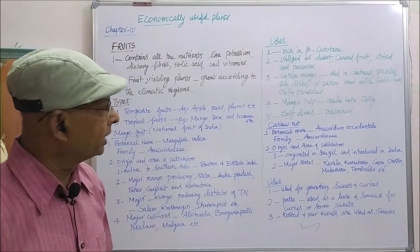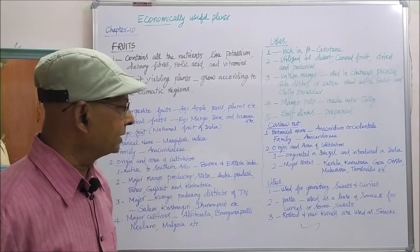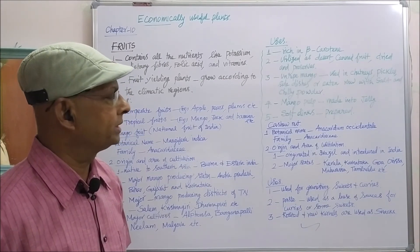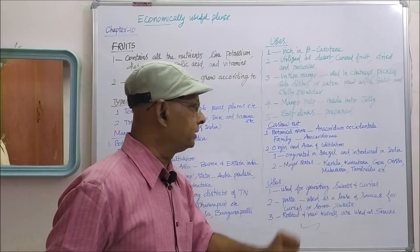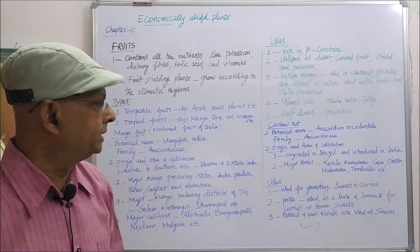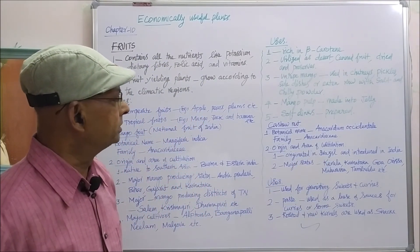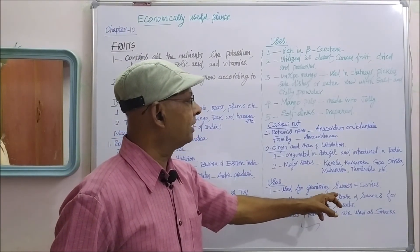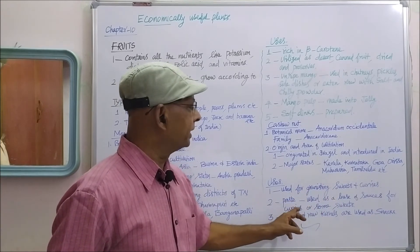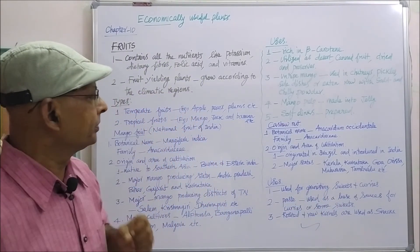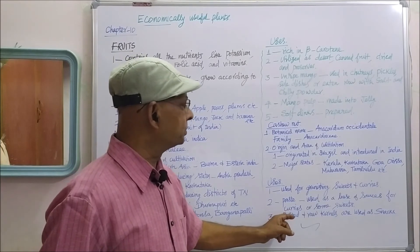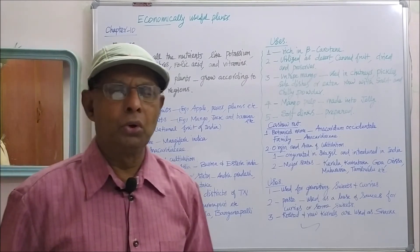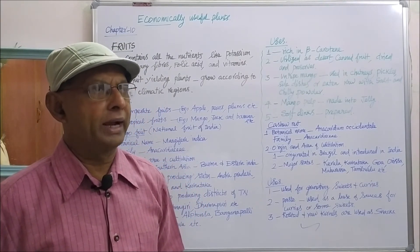What are the uses of cashew nut? The cashew nut is used for garnishing sweets and curries — that means in order to decorate sweets and curries it is used. The paste prepared from the cashew nut is used as a base of sauces for curries and some sweets. The roasted cashew nut and raw kernels are used as snacks.